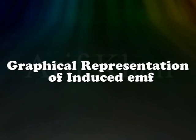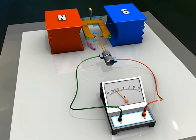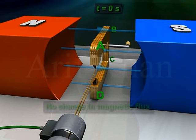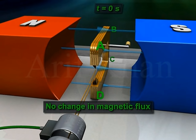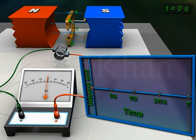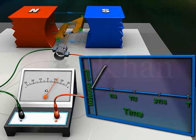For the graphical representation of the induced EMF, suppose the armature takes T seconds to complete one rotation. At time t = 0, the armature ABCD is vertical with arm AB up and arm CD down. At this position, the rate of change of magnetic flux is momentarily zero, hence the induced EMF is zero.